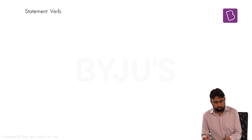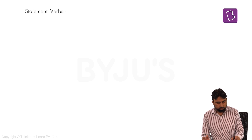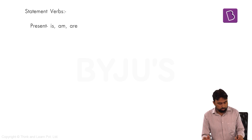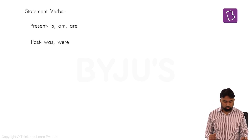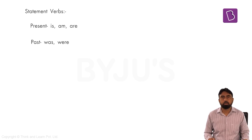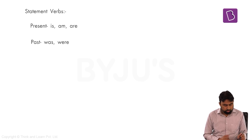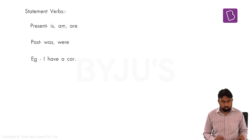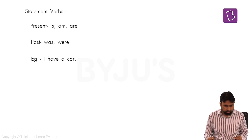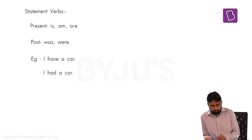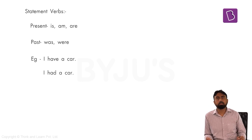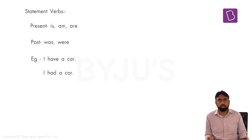Statement verbs in present are: is, am, are. In past: was, were. Similarly, 'have' and 'had' can also express position or statement — for example, 'I have a car' (simple present, stating possession) and 'I had a car' (simple past). So is, am, are, have, was, had — these can all convey statements and positions without being action verbs.